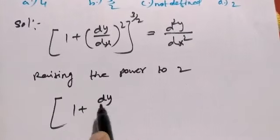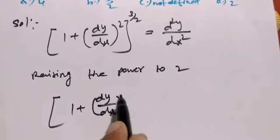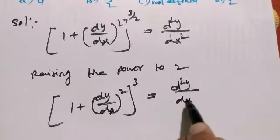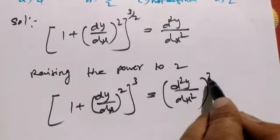So the differential equation becomes [1 + (dy/dx)²]³ = (d²y/dx²)².